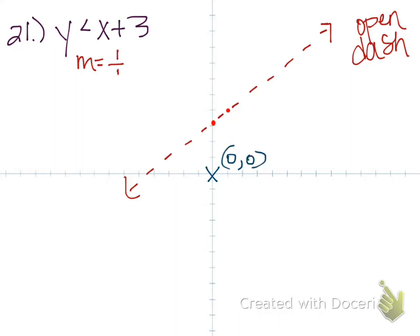If we test 0, 0, what that means is plug 0, 0 into my original inequality and see if it gives me a true or false statement. So is 0 less than 0 plus 3? That is the question. So 0 less than 3. Is that true or false? That is definitely true.